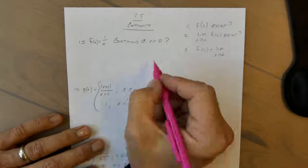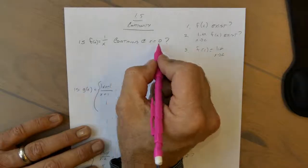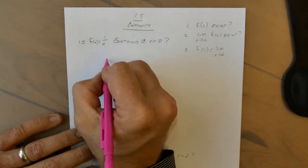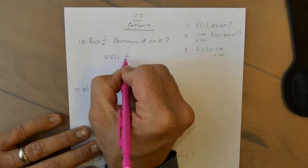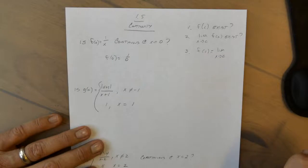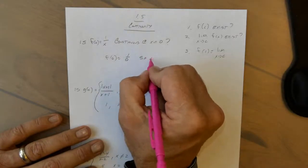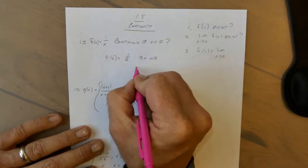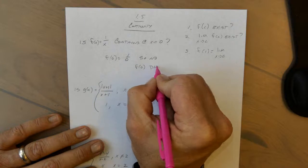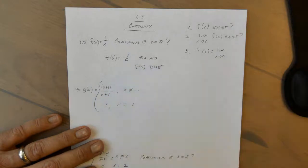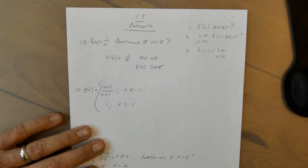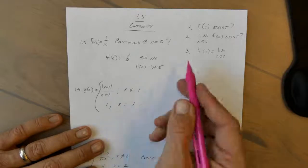For our first one, if we substitute zero into our function we get 1/0, which is undefined. So we can say no, f(0) does not exist, and we can move on — the limit doesn't exist either. All it takes is one condition to fail.